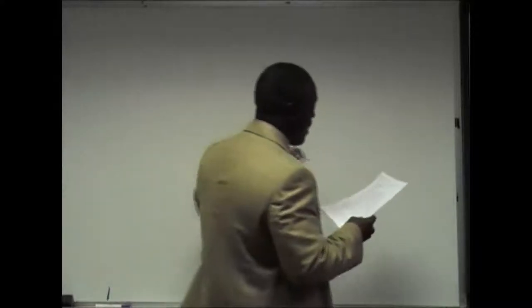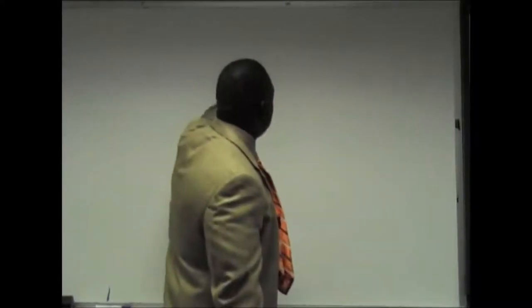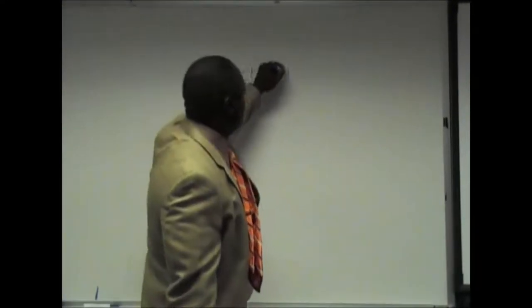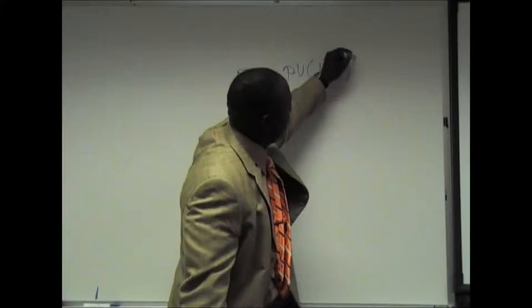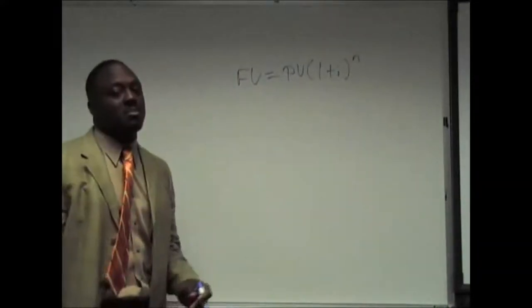We are going to talk about the future value of $100 received today and deposited at 6% for 4 years. We use the gray row on the BA2 plus. We can use a formula method to find the future value. The formula method for the future value is FV equals PV times 1 plus I over N, and N being the number of periods, not necessarily the number of years, just the number of periods involved in the problem.